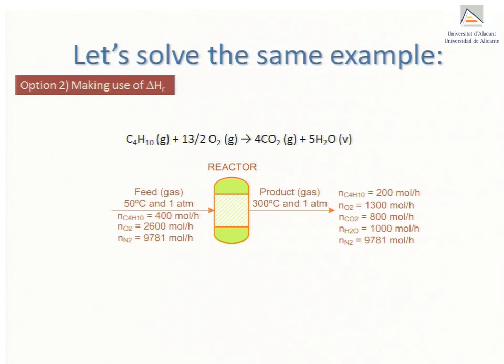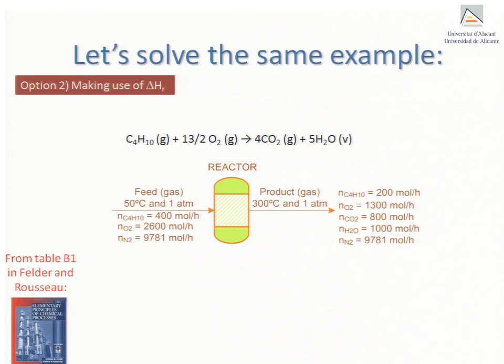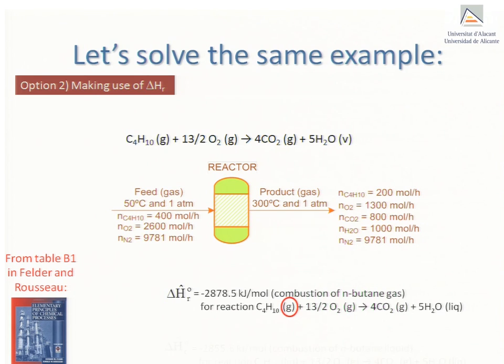This allows us to check that the delta H we obtain by the two methods is in fact the same. When we consult table B1 in Felder and Rousseau's book we find two enthalpies of combustion for butane, one for butane gas and the other for liquid butane.